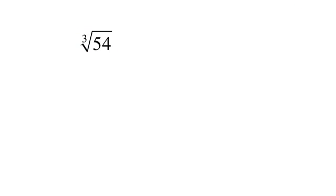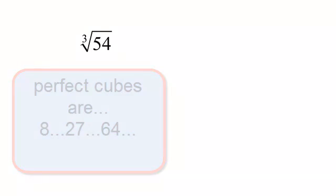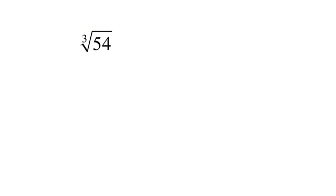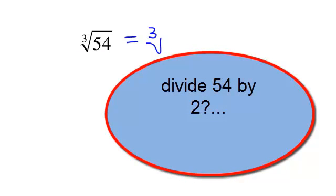Now, how would I do it? I would have become familiar with my cube roots, which are numbers like 2 to the third is 8, 3 to the third is 27, 4 to the third is 64. And I would know that the cube root of 54, well, divide it by 2, I get 27. And yes, that would make me smile.